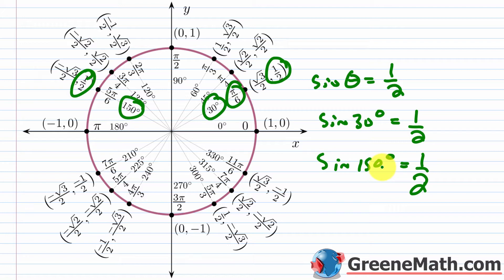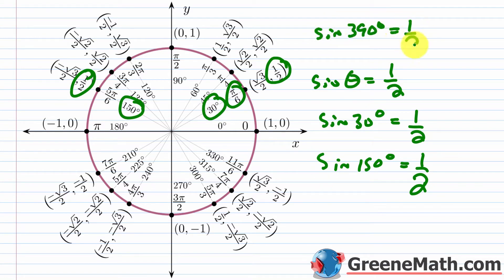For solutions over the interval from 0 to 360 degrees, our answers are 30 degrees and 150 degrees. For a general solution, remember the period for sine and cosine is 360 degrees (or 2 pi). So rotating 360 degrees gives another solution: sine of 390 degrees also equals 1/2, then 750 degrees, and so on. Same for 150 degrees — adding 360 gives 510 degrees, and so forth.